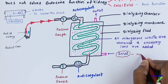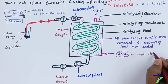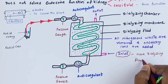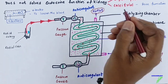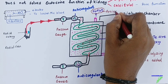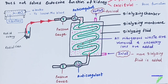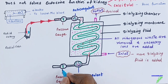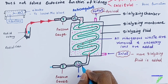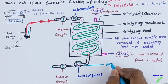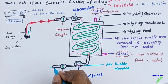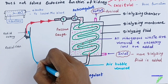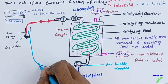Through the inlet, fresh dialyzing fluid is added. When the fluid contains excess nitrogenous waste and less salt, the used dialyzing fluid is drained from the outlet and new fluid is added. Any air bubbles in the blood are removed before passing through the anti-coagulant, and then the cleaned blood travels via the radial vein back into the body.